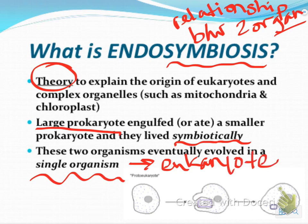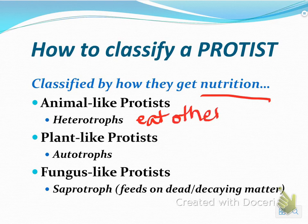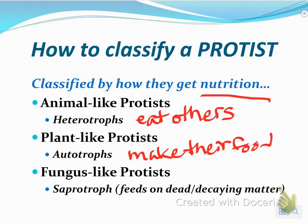When you have one cell inside of another cell, as shown in this picture, it eventually turns into organelles. That's the theory behind the first eukaryotes on Earth. Protists are classified by how they get nutrition. Animal-like protists are heterotrophs, meaning they eat others. Plant-like protists are autotrophs, meaning they make their food. Fungus-like protists are saprotrophs — a new term meaning they feed on dead or decaying matter.